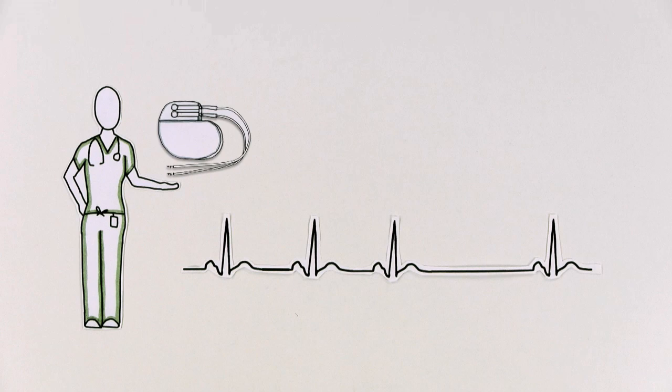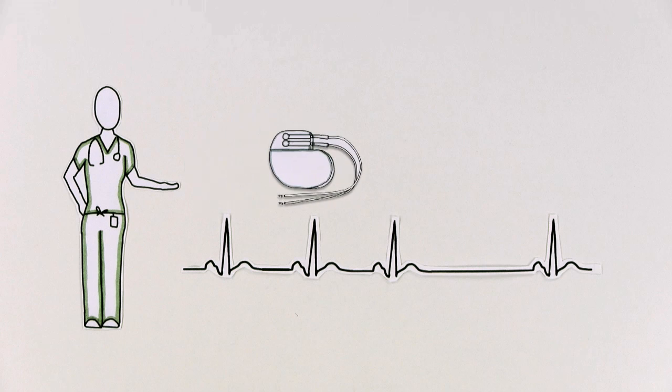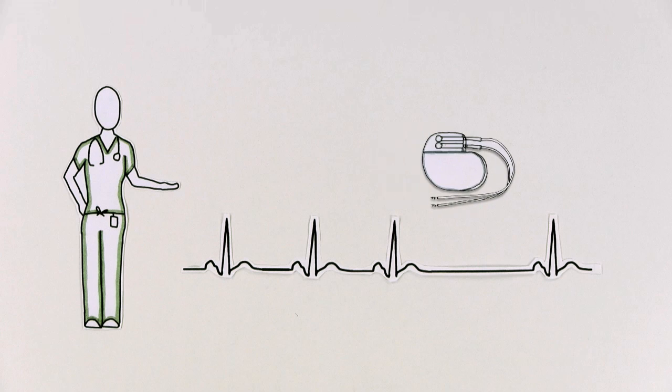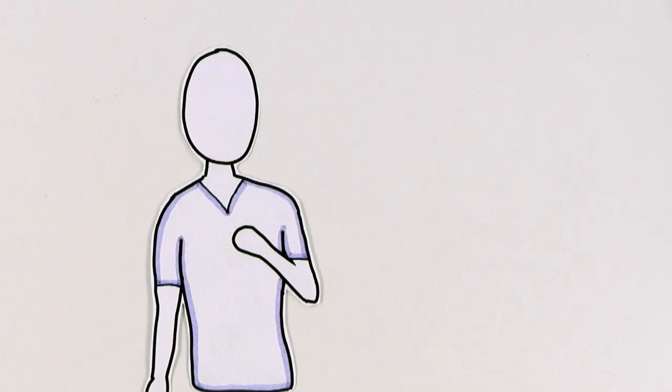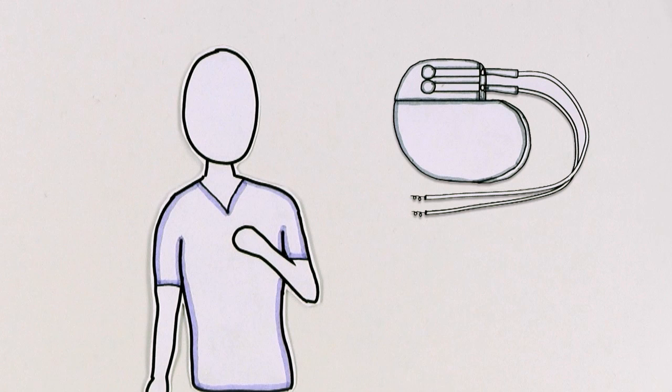Her doctor said a pacemaker would help by always keeping track of her heartbeat and springing to action when the rhythm gets too slow. That sounded great, but how does it work? What happens when it springs to action?